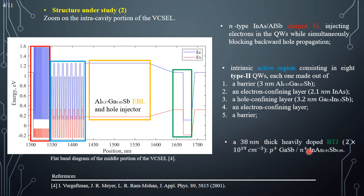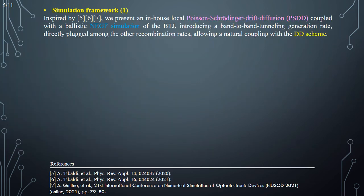Finally, there is the heavily doped buried tunnel junction made out of a P-plus gallium antimonide side and an N-plus indium arsenide antimonide side. This tunnel junction makes this device significantly different with respect to the PIN counterpart. Indeed, the whole structure can be seen as an N-I-P-P-plus-N-plus-N heterojunction. Our simulation framework presents a local Poisson-Schrödinger drift-diffusion simulator coupled with a ballistic non-equilibrium Green's function simulation of the buried tunnel junction alone, which introduces a band-to-band tunneling generation rate directly plugged among the other drift-diffusion recombination rates.